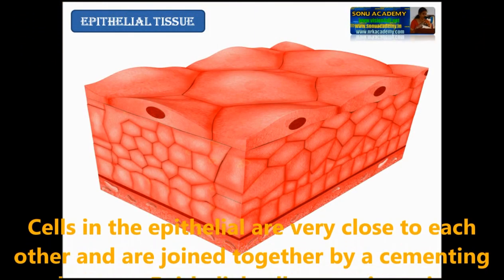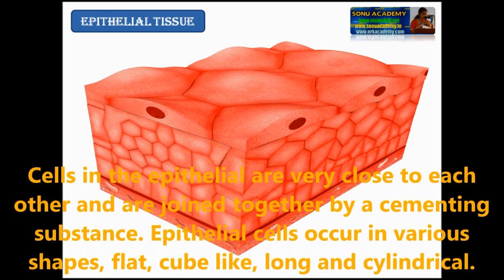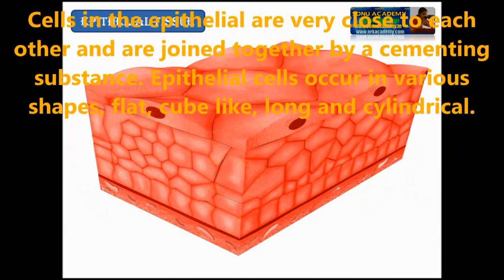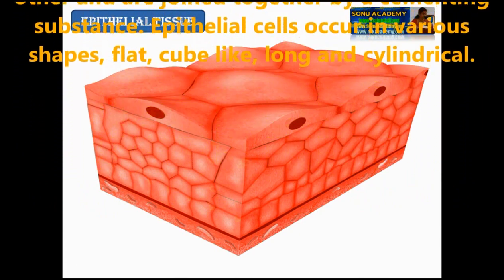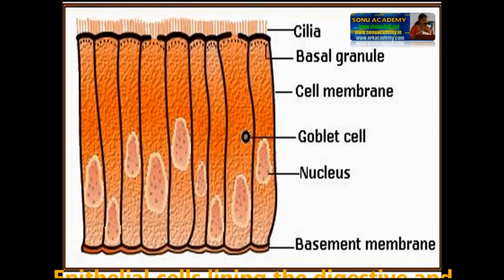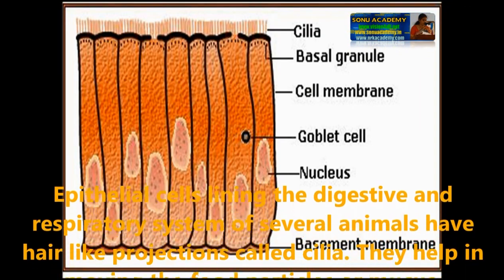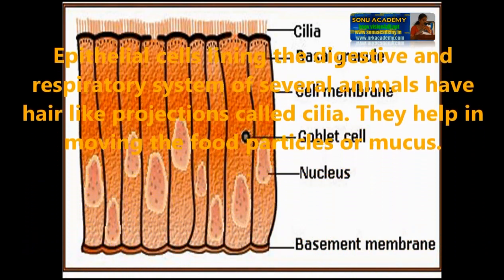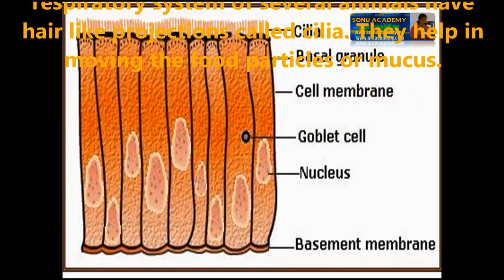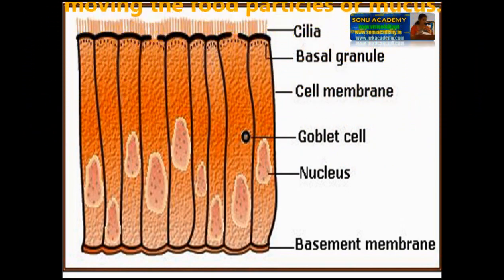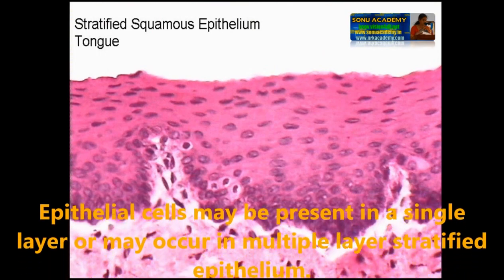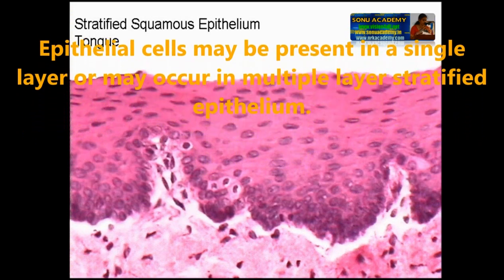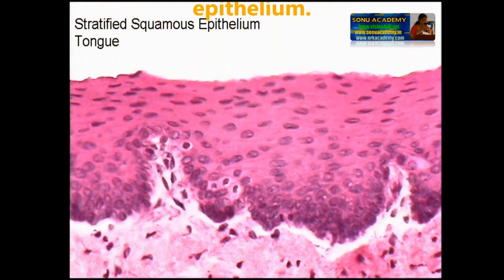Cells in the epithelium are very close to each other and are joined together by a cementing substance. Epithelial cells occur in various shapes: flat, cube-like, long and cylindrical, etc. Epithelial cells lining the digestive and respiratory systems of several animals have hair-like projections called cilia, which help in moving food particles or mucus. Epithelial cells may be present in a single layer called simple epithelium or may occur in multiple layers called stratified epithelium.